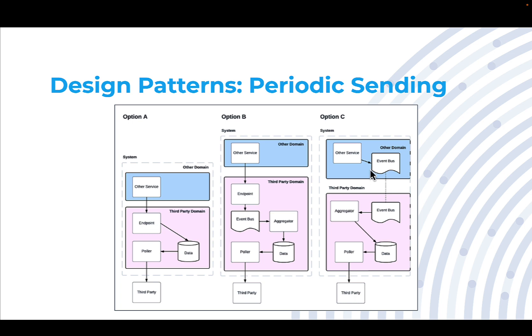In the final option, we have taken some of the logic and we've put it in the domain itself. Instead of the other domain having to call an endpoint, that other domain when it needs to do this just puts an event on the event bus. And since that event bus is shared, the idea is that we have some sort of aggregator in our third party domain sit there and aggregate that data in the data store, then relying on the poller to submit that data as needed.